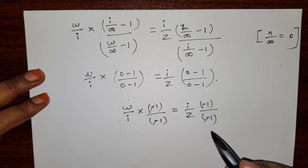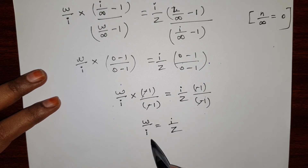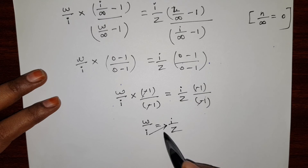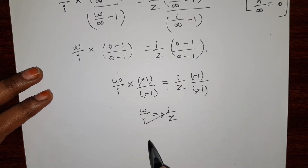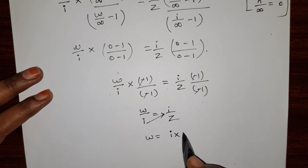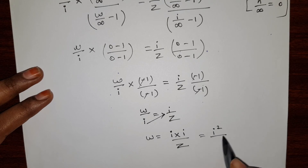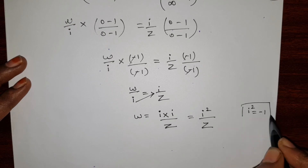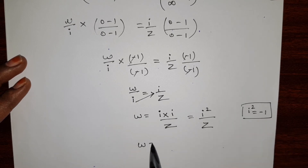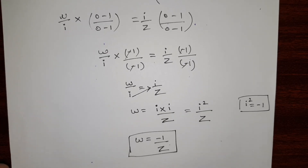The minus signs cancel. So the remaining term is w divided by i equals i divided by z. Taking this to the right-hand side, it becomes w equals i times i divided by z, which is i squared divided by z. The value of i squared is minus 1. Substituting, we get w equals minus 1 divided by z. This is our bilinear transformation for this problem.